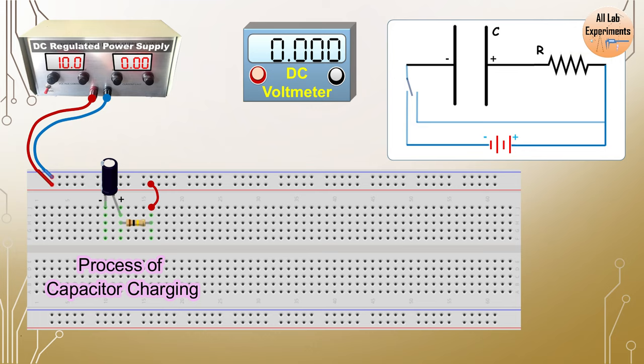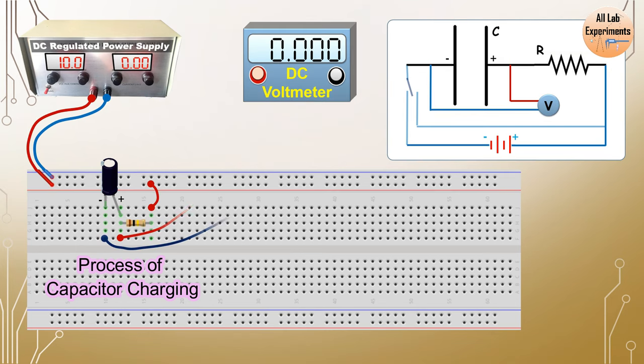Just the time when we complete this loop this capacitor will start charging, so we need to take readings from that point only. So before that we are going to connect a DC voltmeter across this capacitor.